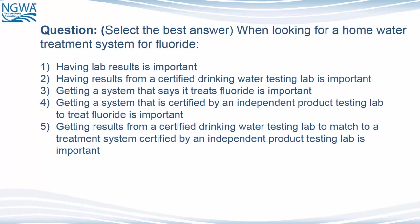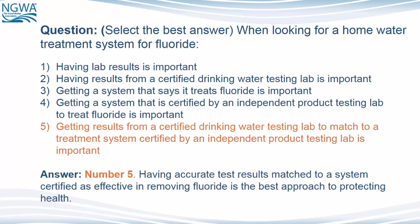Question: Select the best answer. When looking for a home water treatment system for fluoride: 1. Having lab results is important. 2. Having lab results from a certified drinking water testing lab is important. 3. Getting a system that says it treats fluoride is important. 4. Getting a system that is certified by an independent product testing lab to treat fluoride is important. 5. Getting results from a certified drinking water testing lab matched to a treatment system certified by an independent product testing lab is important. The answer is number 5. Having accurate test results matched to a system certified as effective in removing fluoride is the best approach to protecting health.